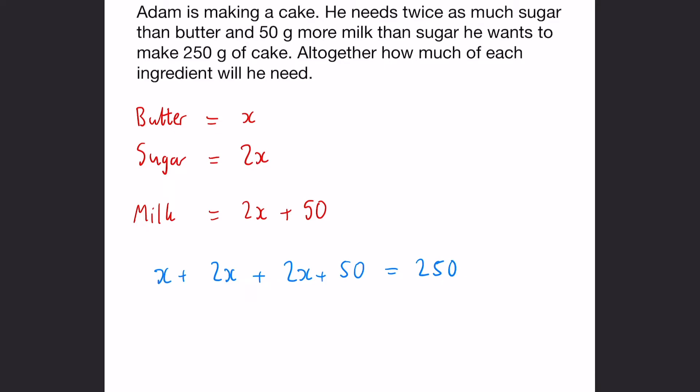So we can say that x plus 2x plus 2x plus 50 equals 250. Now if we collect all the terms up, we can see we've got x plus 2x plus 2x and that is 5x and plus 50 equals 250.